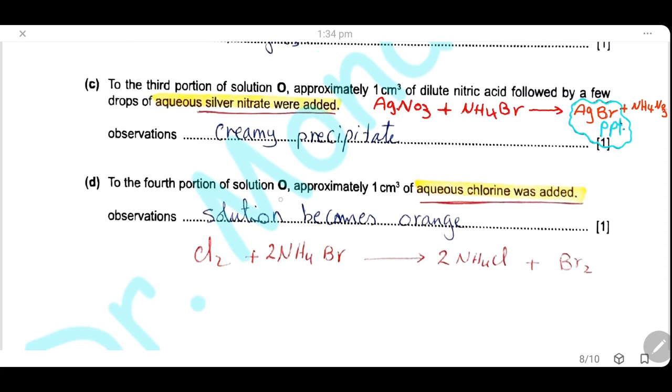To the fourth portion of solution O, 1 cm³ of aqueous chlorine was added. The observation is solution becomes orange because chlorine is more reactive than bromine. So it will displace bromine from its salt. Bromine solution is orange-brown in color. So the orange color is due to formation of bromine.